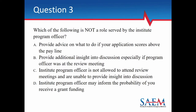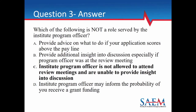Question 3: Which of the following is NOT a role served by the institute program officer? A — provide advice on what to do if your application scores above the pay line; B — provide additional insight into discussion, especially if the program officer was at the review meeting; C — institute program officers are not allowed to attend review meetings and are unable to provide insights; or D — institute program officers may inform the probability of you receiving grant funding. The answer is C — they ARE allowed to attend review meetings and provide insights.